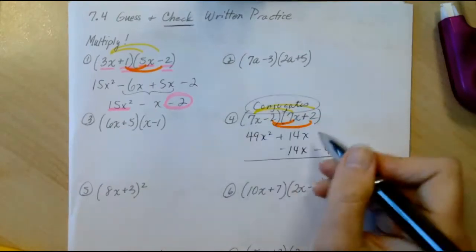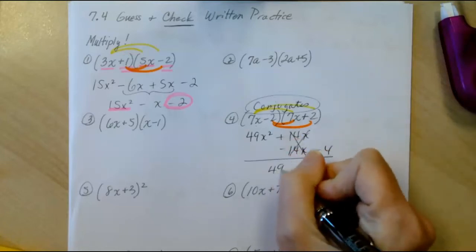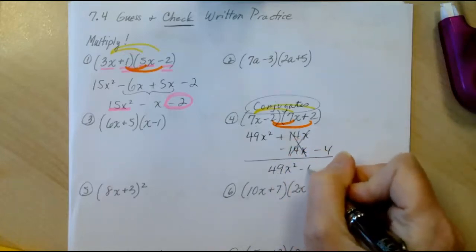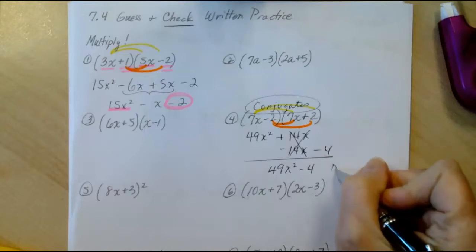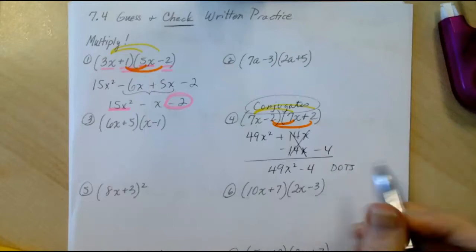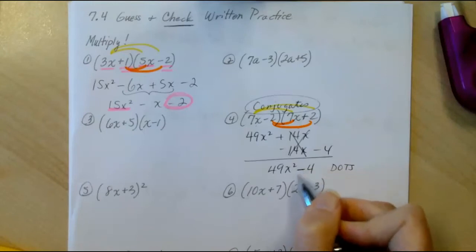And remember, when we have conjugates, the middle terms cancel, and we're left with 49x squared minus 4, which we are going to call the DOTS, the difference of two perfect squares. So this is our product.